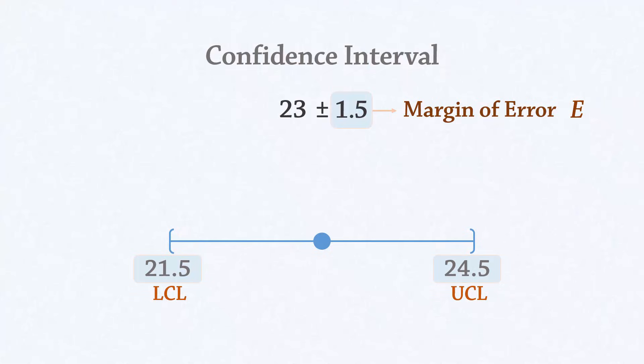In essence, the confidence interval estimate for a population mean lies between the sample mean minus the margin of error and the sample mean plus the margin of error. The margin of error is calculated based on a confidence level.